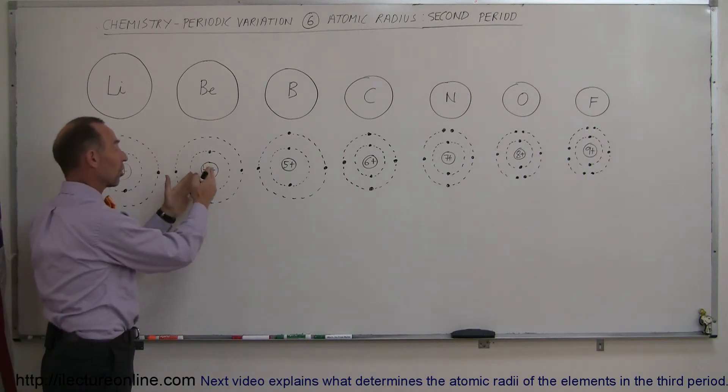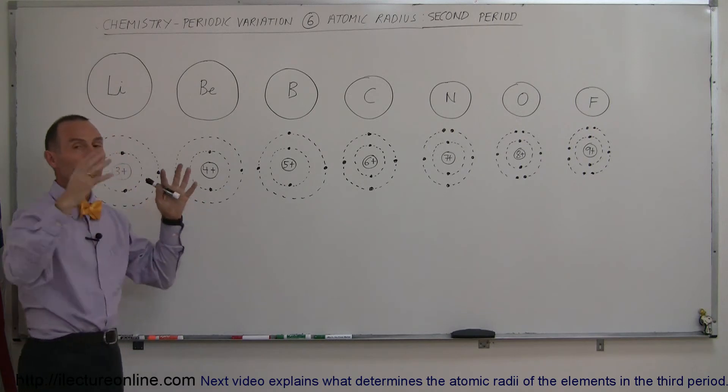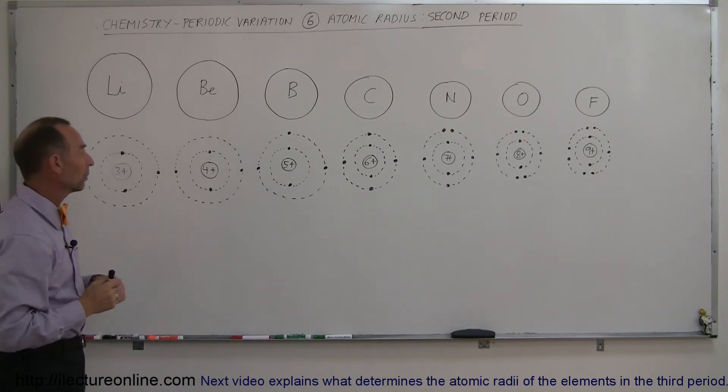And now the nucleus has four charges instead of three, so it's pulling those two outer electrons in a little bit closer, making the atom a little bit smaller.